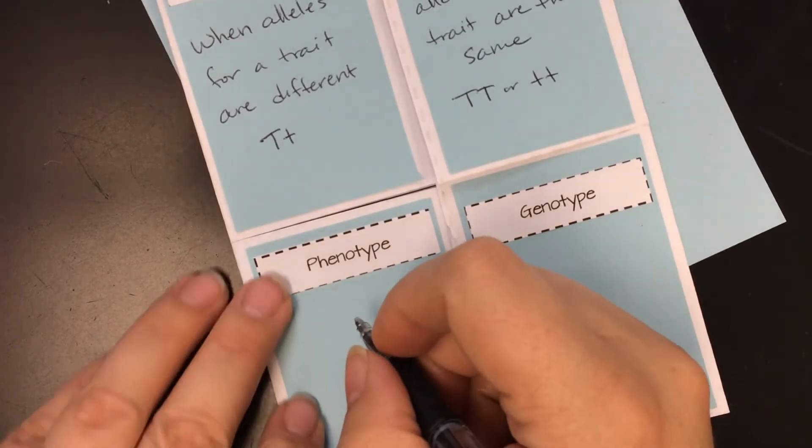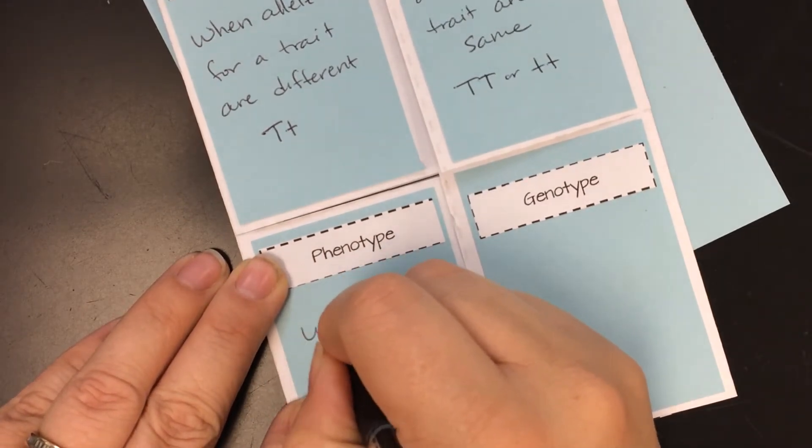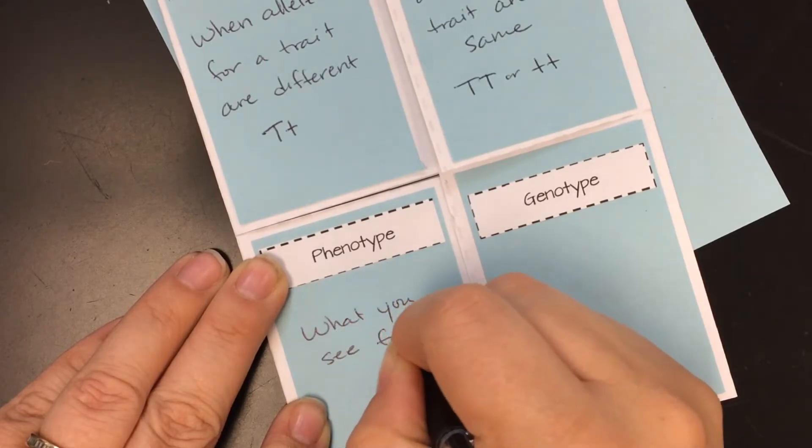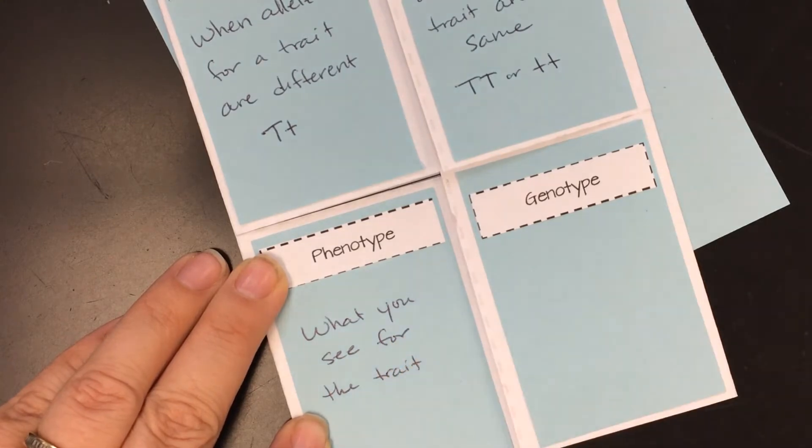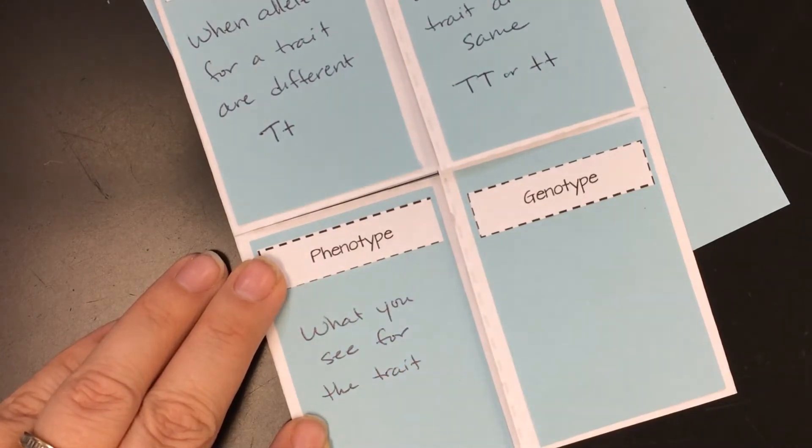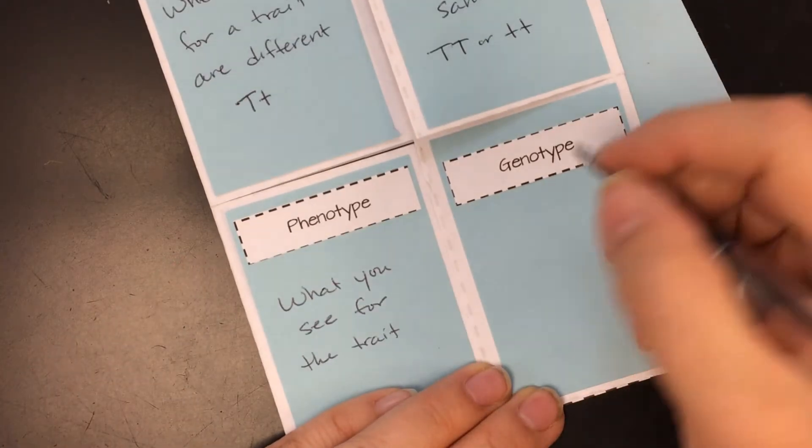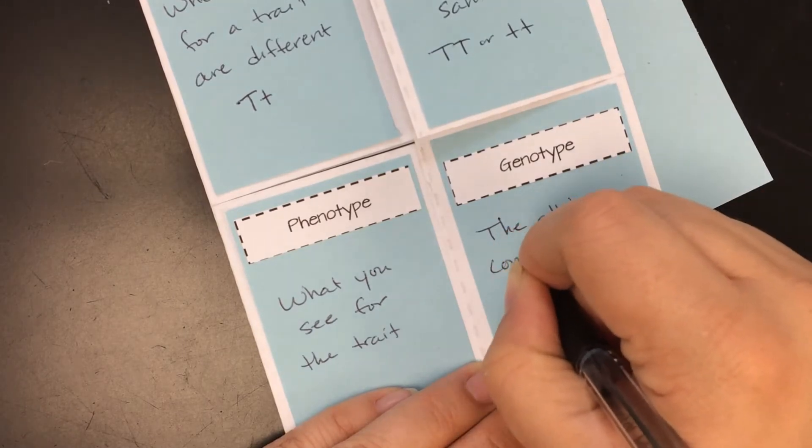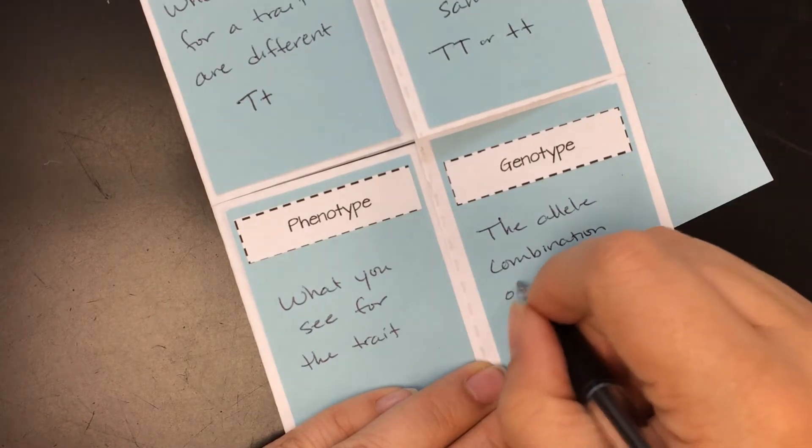The phenotype is what you see for the trait. So in this case, if we're using T's that might be tall or short. It could be color like yellow or green. And then genotype is the allele combination of an organism.